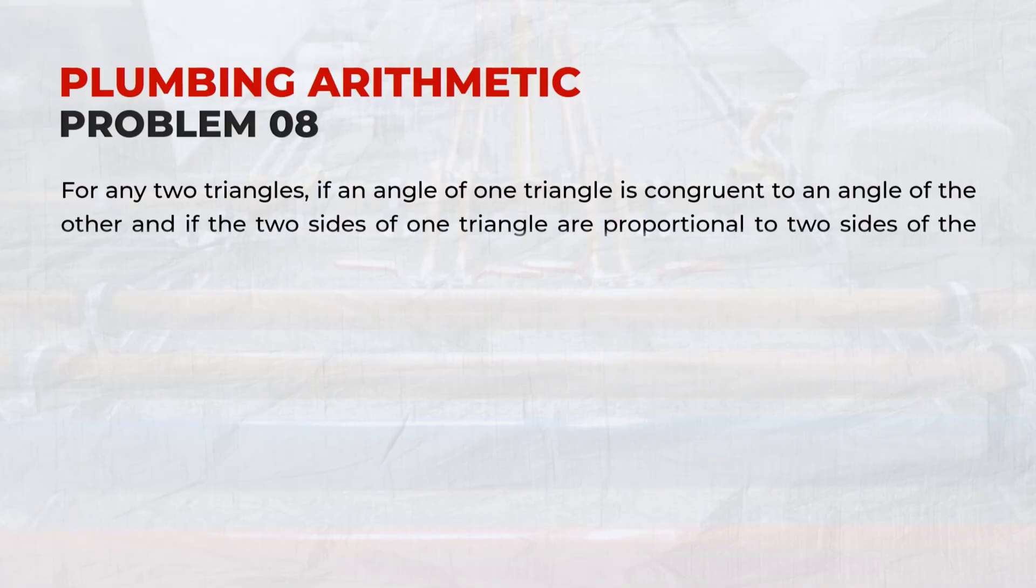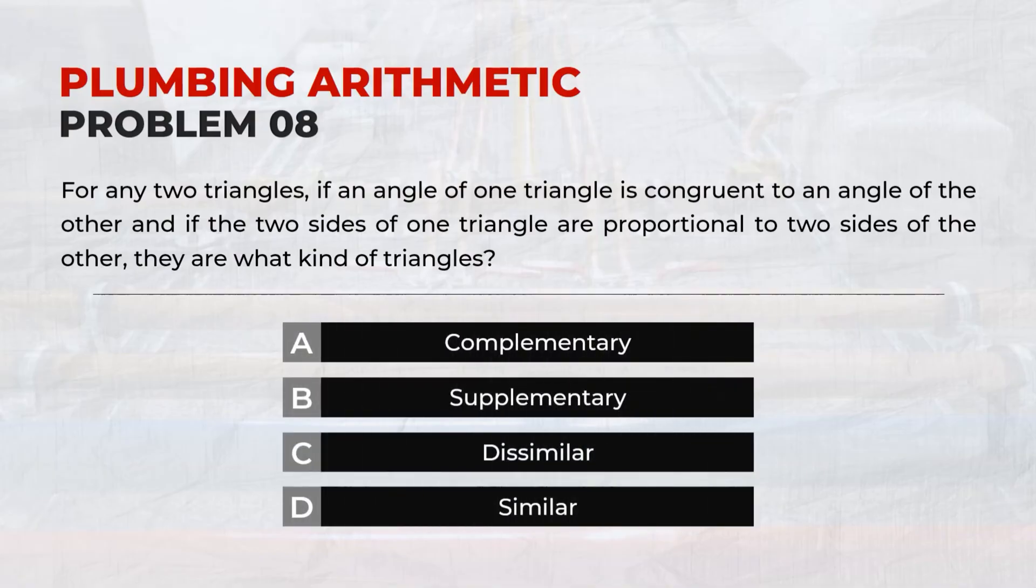For any two triangles, if an angle of one triangle is congruent to an angle of the other, and if the two sides of one triangle are proportional to two sides of the other, they are what kind of triangles? D, Similar.